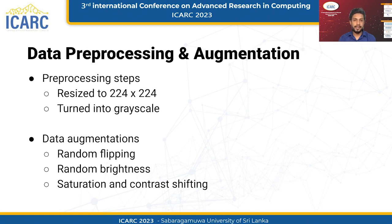Data preprocessing and augmentation are important steps in developing a machine learning model for automated chest X-ray report generation. In our research, we resized the input image to 224×224 pixels and converted the data to grayscale. This was done to reduce the computational complexity of the model and focus on the important features in the chest X-ray images. We also used several data augmentation techniques to increase variability in the training data and improve the generalization performance of the model. These techniques included random flipping, random brightness adjustments, and saturation and contrast shifting.